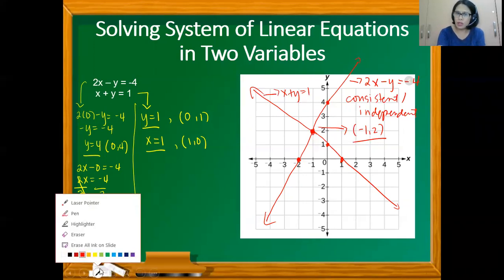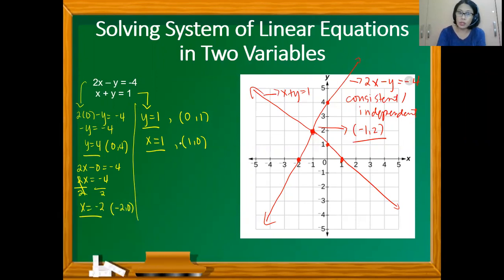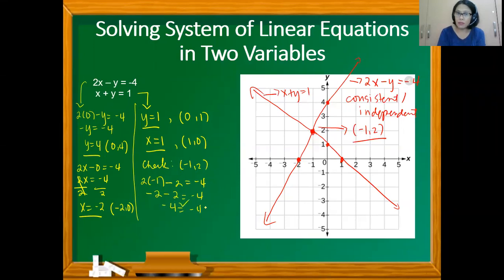The solution should satisfy both equations. Substituting (−1, 2) into the first equation: 2(−1) minus 2 equals negative 4, giving −4 = −4. ✓ For the second equation: −1 plus 2 equals 1, giving 1 = 1. ✓ Therefore, the solution for the first system is (−1, 2).